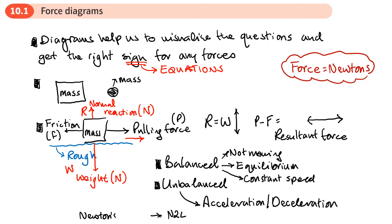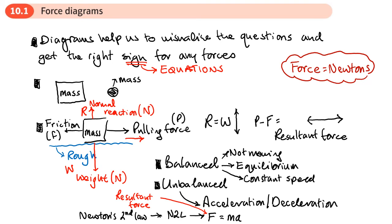Newton's Second Law basically says that when these forces are unbalanced, the resultant force — the force that's left over — equals the mass times the acceleration. So F here is the resultant force, the force that's left over when the forces are not balanced.